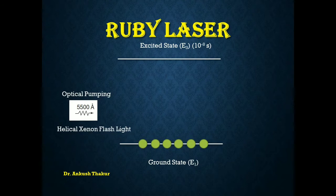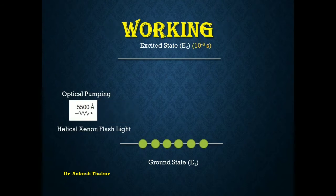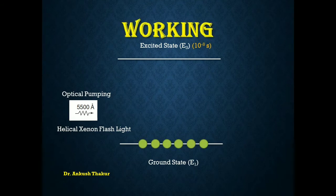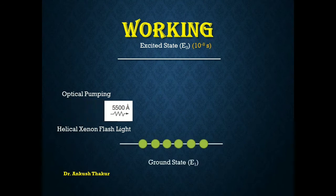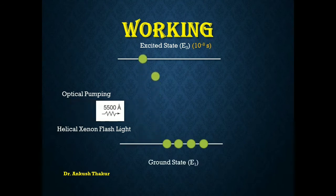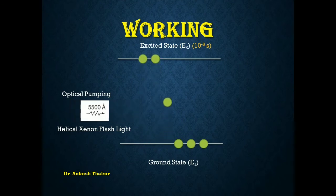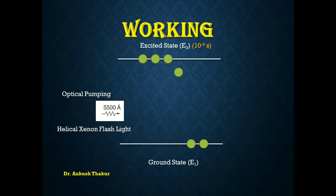Optical pumping is required for the ruby laser. A helically wound xenon lamp flash is required. The essential wavelength required for the mechanism is 5500 angstroms. When you switch on the xenon lamp, a particular wavelength of 5500 angstroms is absorbed by the ground state atoms. They absorb the energy and move toward the excited state, generally shifting from the ground state E1 to the excited state E3.